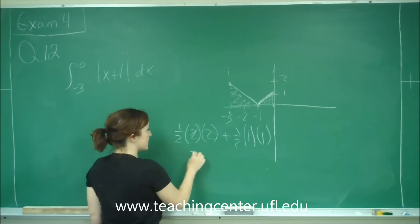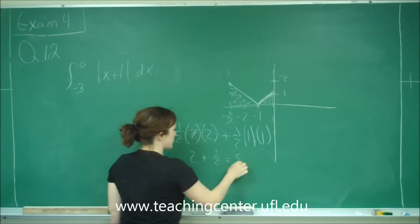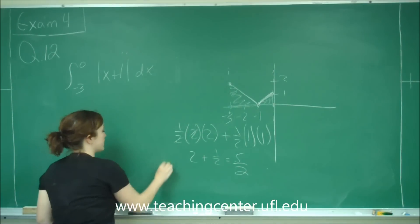And so this gives me 2 plus one half, which is the same thing as 5 halves. And that is your answer A.